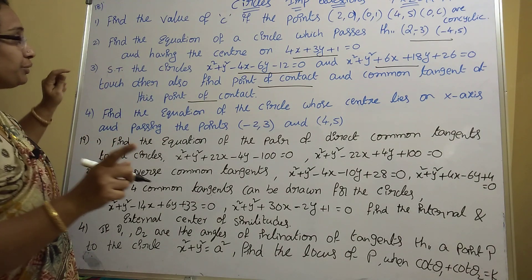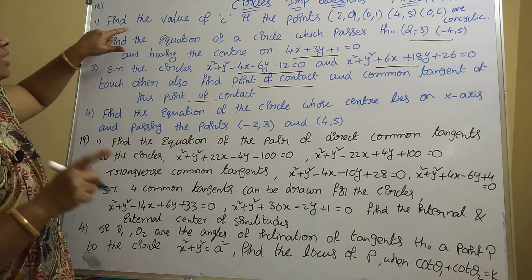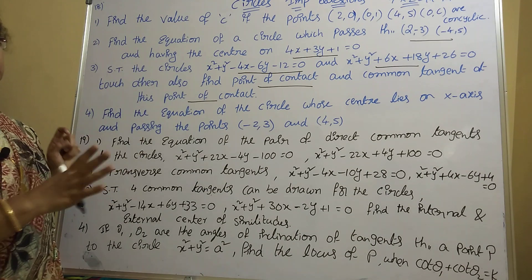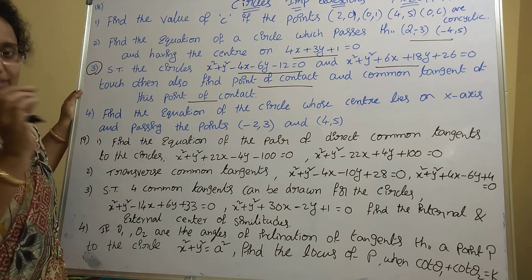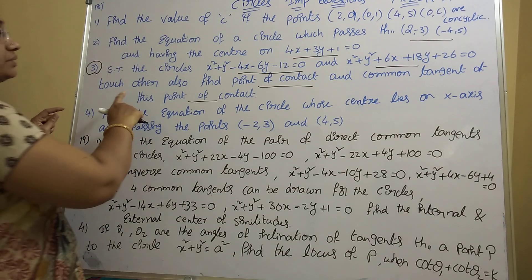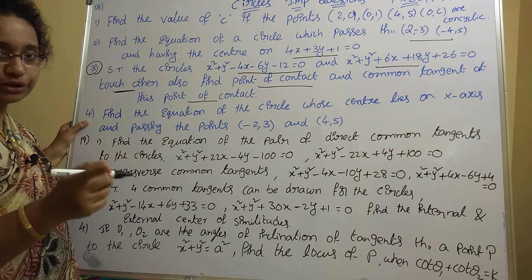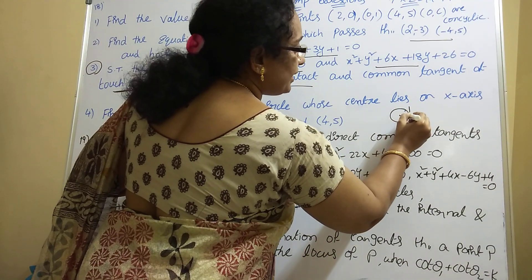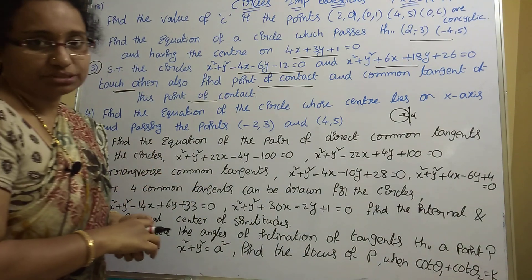Concyclic and passing through points will compulsory come in the 18th bit. For AP students, practice questions one, two, and four — and also this third one, since it appeared last year. For the touching circles condition: two circles touch each other when r₁ + r₂ = d (or |r₁ - r₂| = d). The radius r equals the perpendicular distance d. That is the condition for circles touching each other.